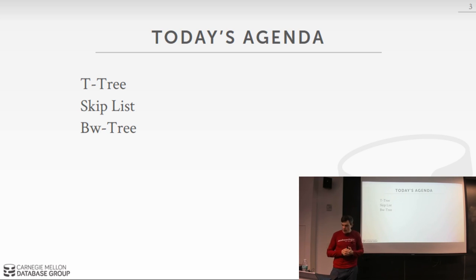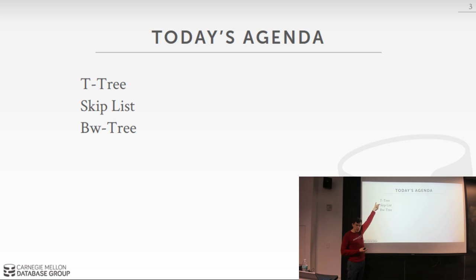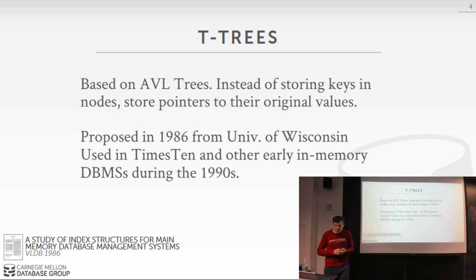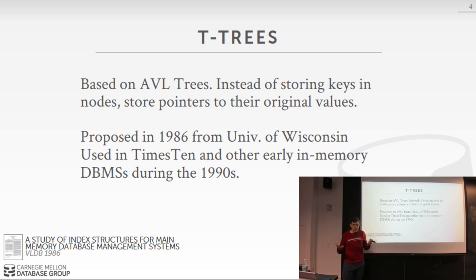For today's lecture, we'll talk about latch-free indexes. I'm listing three types of indexes, but only the last two are actually latch-free. The first one, the T-tree, we'll cover for historical reasons — it's the first memory index built in the 1980s and nobody actually uses them anymore. We'll see what people did back then, but you don't actually want to do this now. The latter two are the more modern implementations.